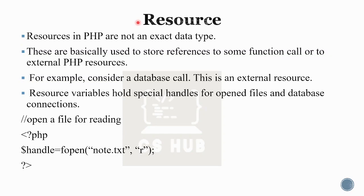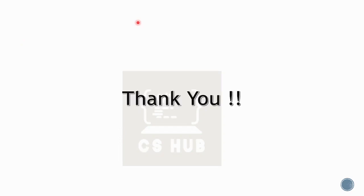That's all about PHP data types. There are 8 data types in total: 4 scalar data types — integer, float, string, boolean; 2 compound data types — array and object; and 2 special data types — null and resource. Hope the concept is clear. See you in the next class or next video. Thank you.